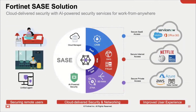On the SASE side, we have cloud-delivered security and cloud-delivered networking, which is the SD-WAN. We have ZTNA, SWG, CASB, and the SD-WAN piece. All these components together give users secure access to private applications, public applications, the internet, and SaaS applications.